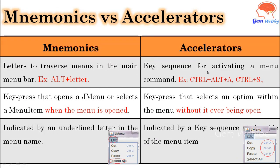Now what is the difference between these two? Mnemonics are letters used to traverse through the menus in the menu bar — you can use them with the Alt key along with the letters provided. Accelerators, on the other hand, are a key sequence used to activate a menu command — a combination of modifiers like Ctrl+Alt+letters or Ctrl+letters in any combination.